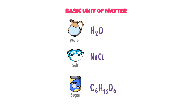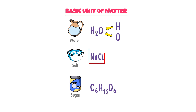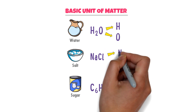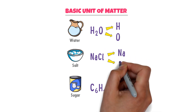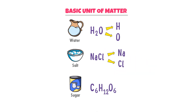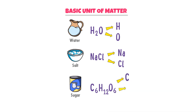We know that there are two atoms present in the H2O molecule: hydrogen and oxygen. There are two atoms in NaCl: sodium and chlorine. There are three atoms in C6H12O6: carbon, hydrogen, and oxygen.